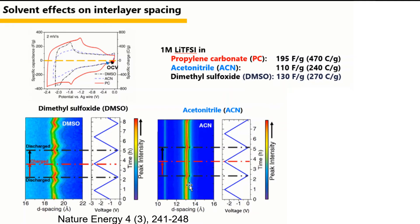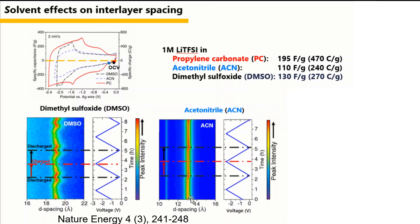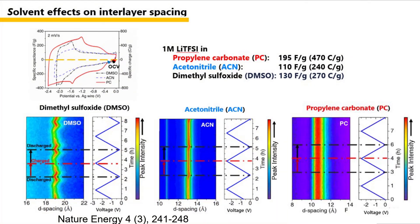For acetonitrile, the interlayer spacing changes near 13 Ångströms — smaller than the DMSO system. The interlayer space is largest at the discharge state and becomes smaller at the charge state. For the propylene carbonate (PC) system, the interlayer space stays constant during the charge and discharge process. More interestingly, the interlayer space is constant at 10.7 Ångströms, which is similar to the pristine MXene.